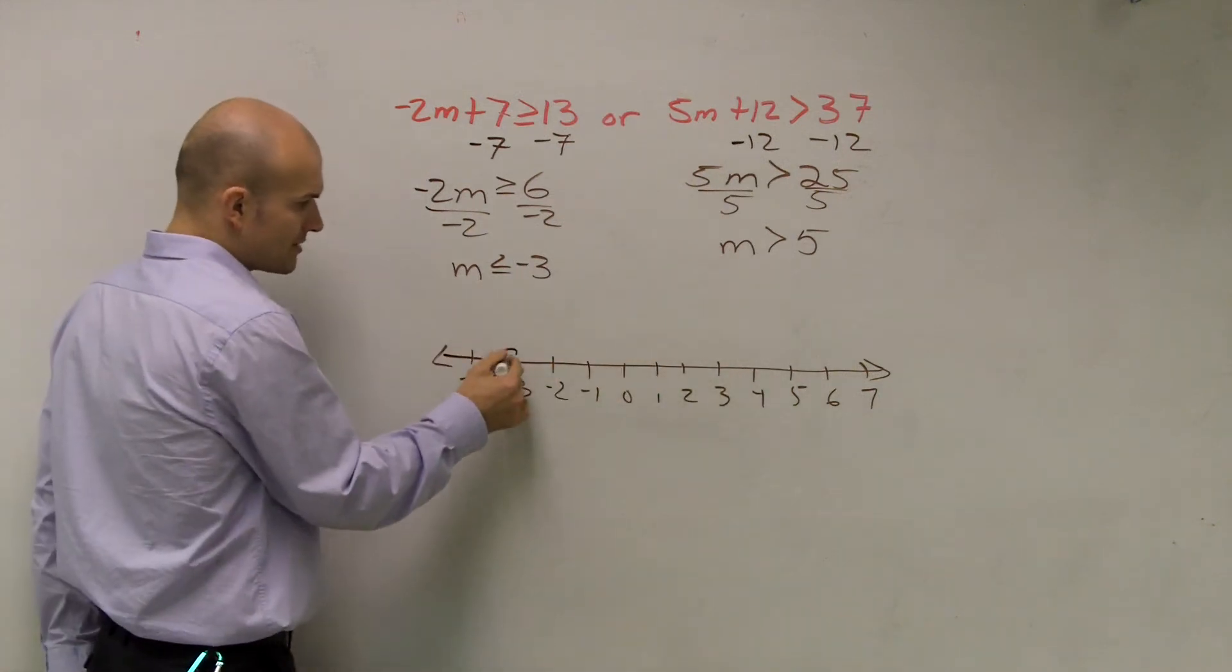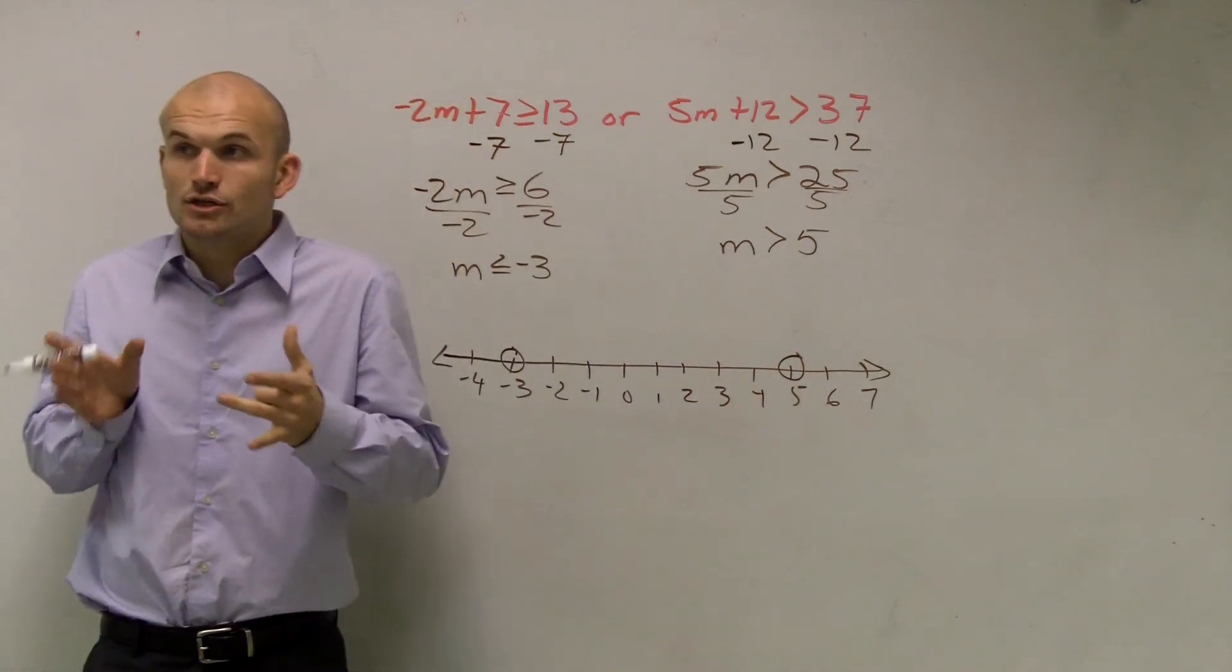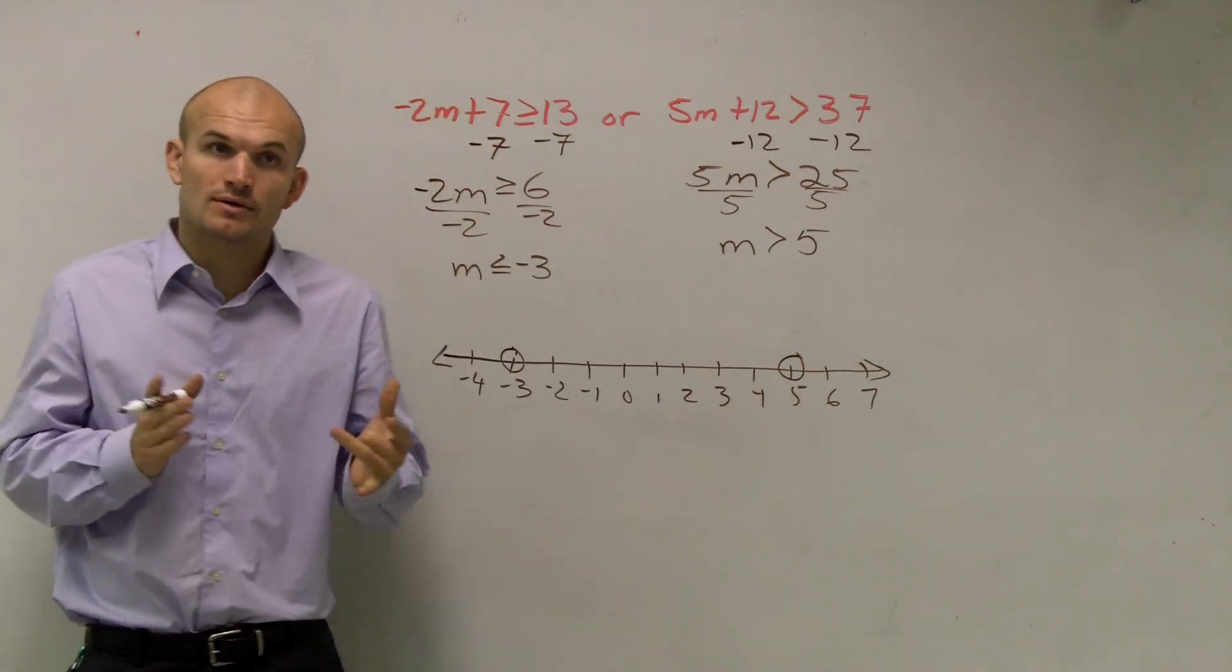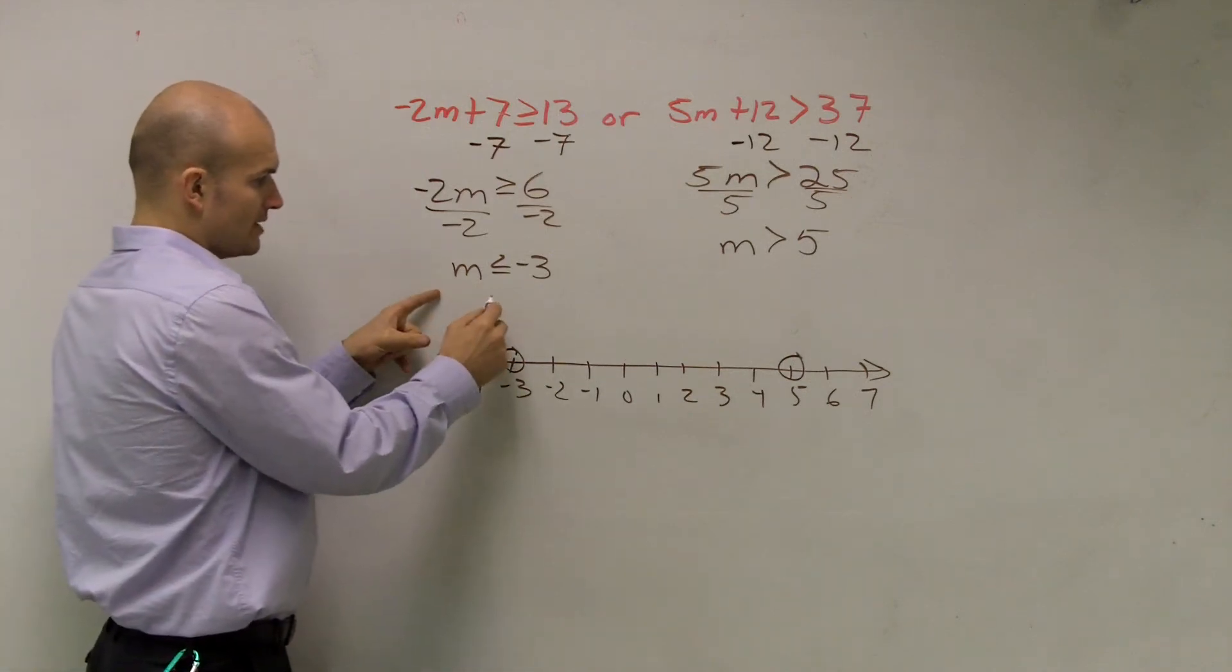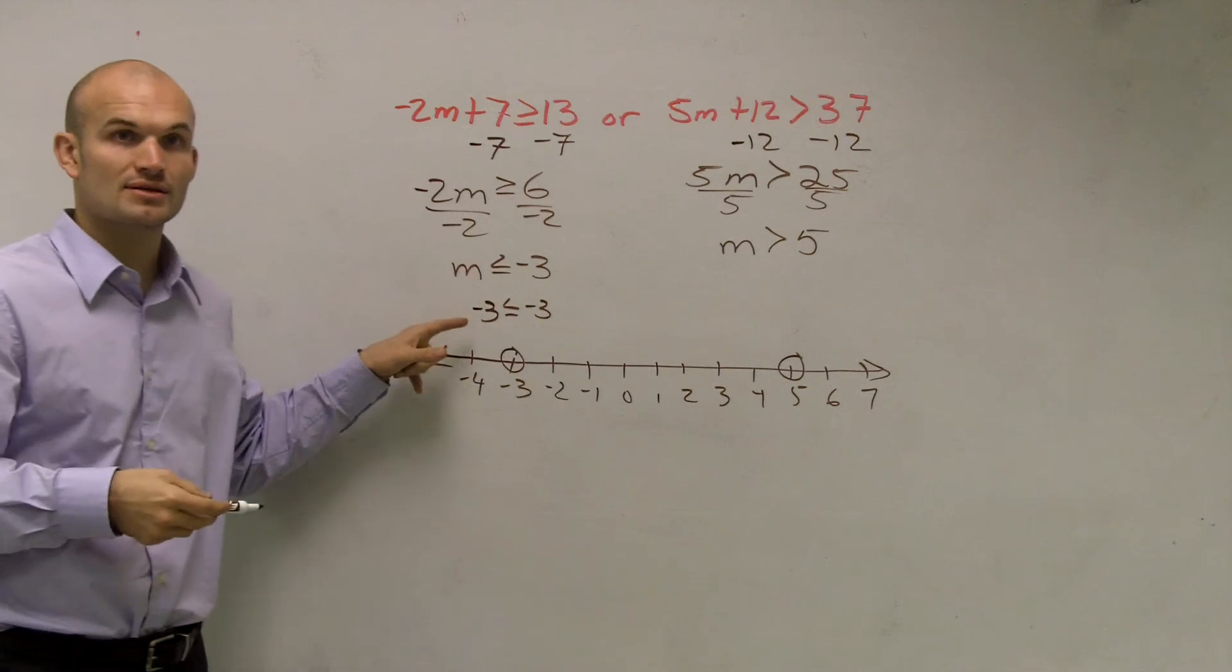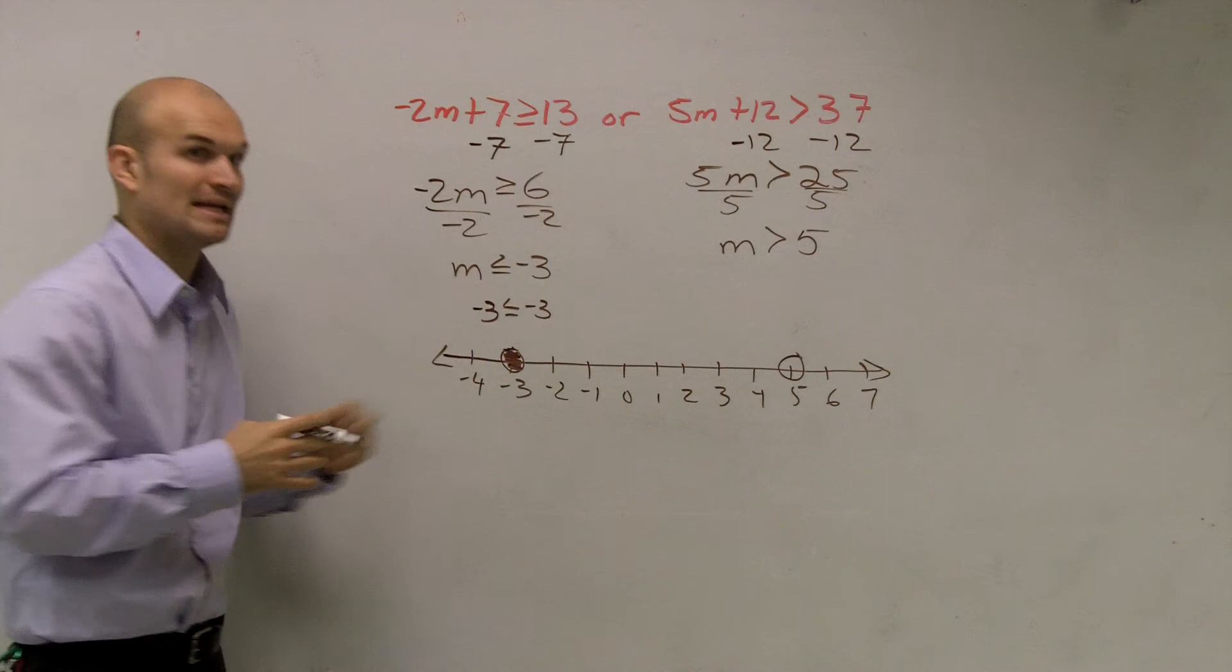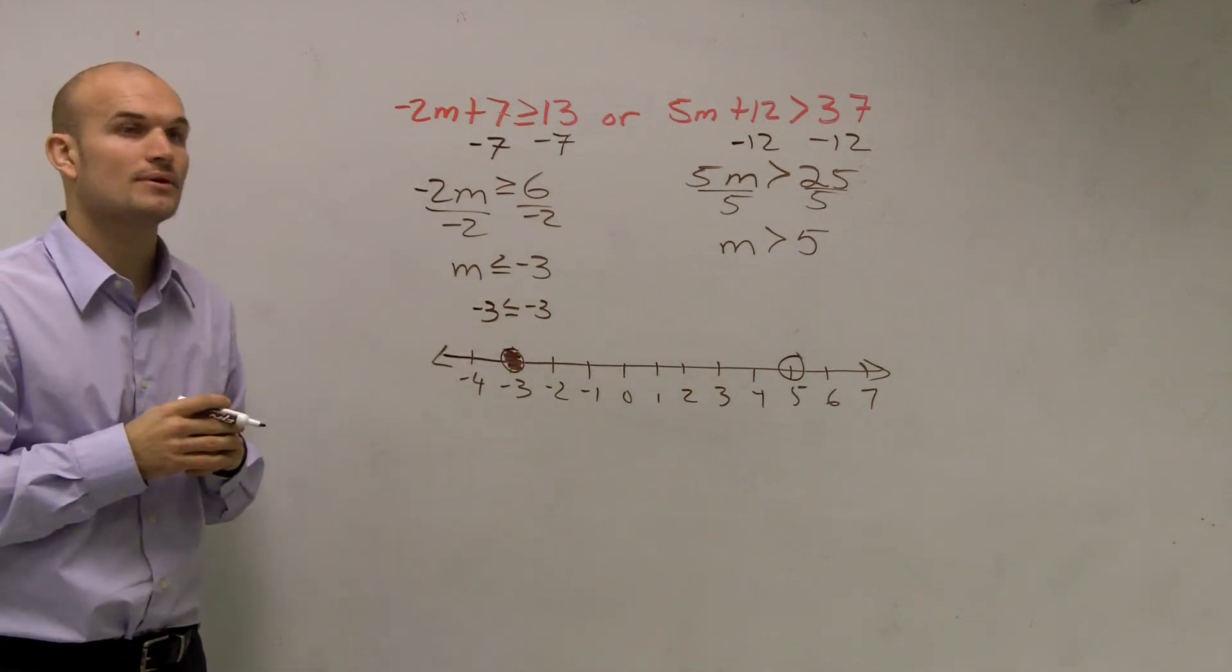Now remember, we only close the dot if it's true. So I look at this and say, is negative 3 less than or equal to negative 3? Is that true or false? The answer is true, right? It's equal to. So therefore, we close this dot, meaning our graph is going to include that point.